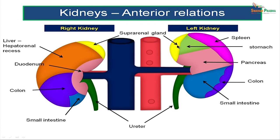On the left side, the upper pole of the left kidney is similarly related to the suprarenal gland, separated by a fascial partition. A triangular area below that is related to the stomach. The outer area is related to the spleen. A horizontal area across the hilum is related to the pancreas. The lower part of the anterior surface of the left kidney is related to the colon and the small intestine.